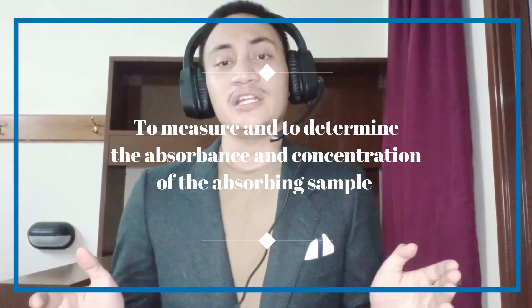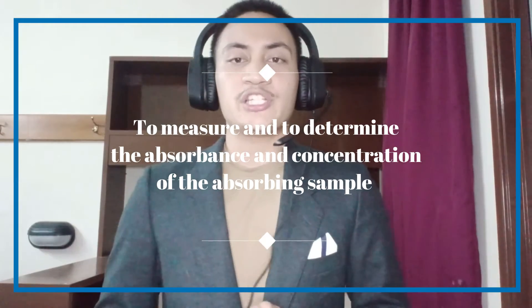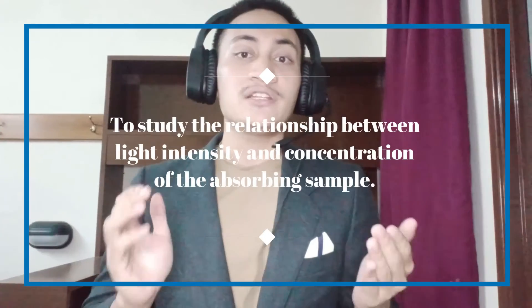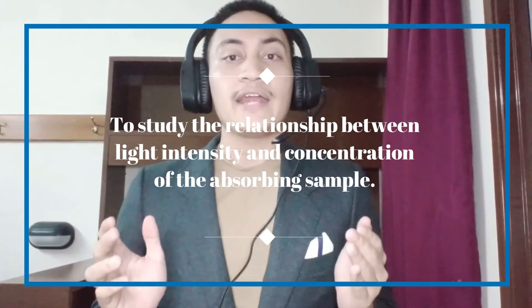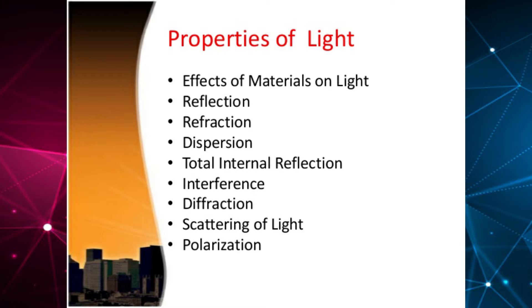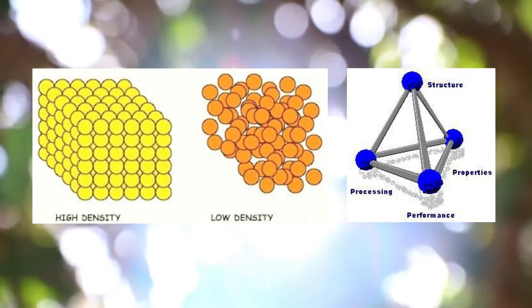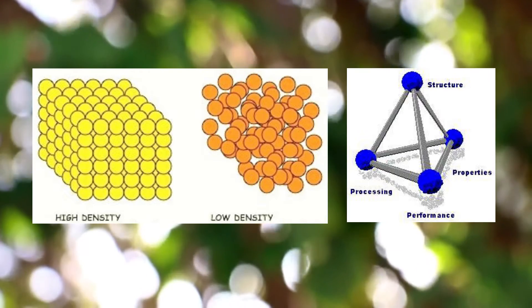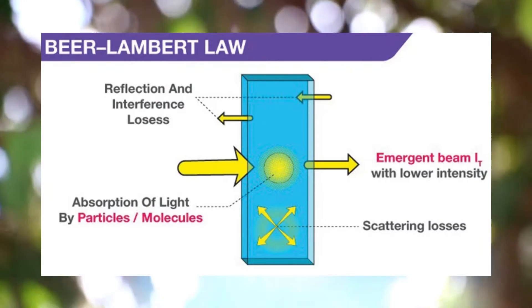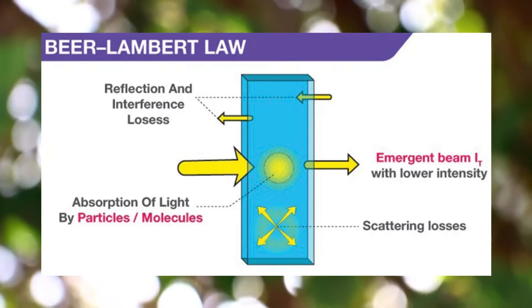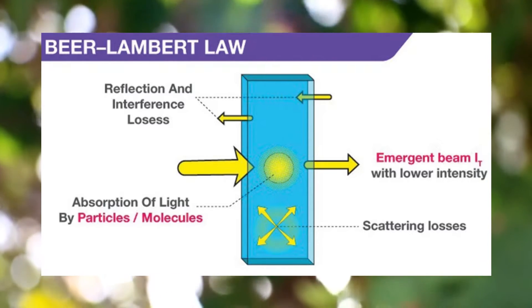For the introduction, this experiment aimed to measure and determine the absorbance and concentration of the absorbing sample, and to study the relationship between the light intensity and concentration of the absorbing sample. This experiment requires the understanding of light and its properties, spectrophotometry, and the structure and properties of substances used to observe light absorption. We should also know the Beer-Lambert law, which relates the attenuation of light through a substance and the properties of that substance.